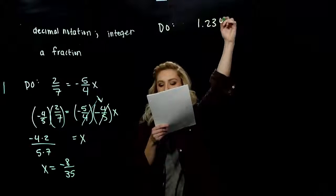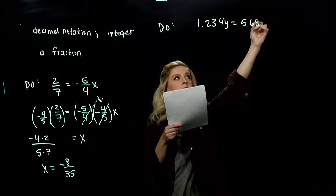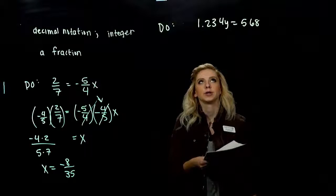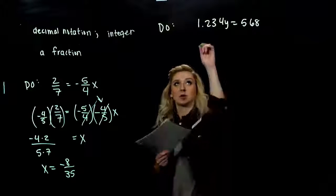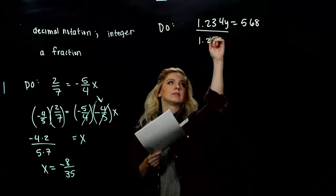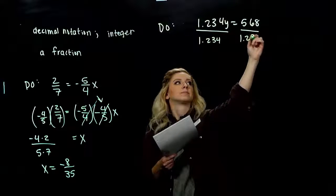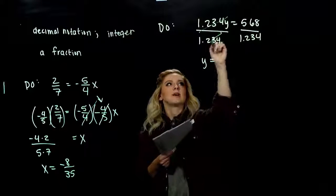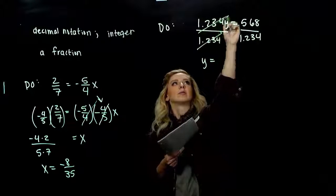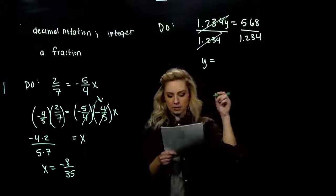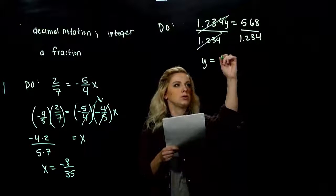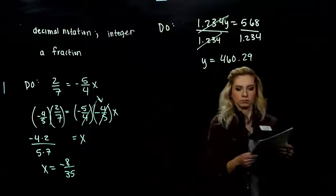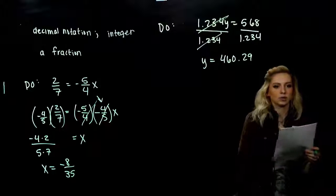The next example has a decimal: 1.234y equals 568. Since it's a decimal, I don't want to multiply by 1 over 1.234. Instead, we'll just divide both sides by the coefficient out on the front. Same thing divided by the same thing — it's going to be gone — and we're left with y. On the right, it is equivalent to 460.29. If you're not convinced, plug it back in and check in the original equation.